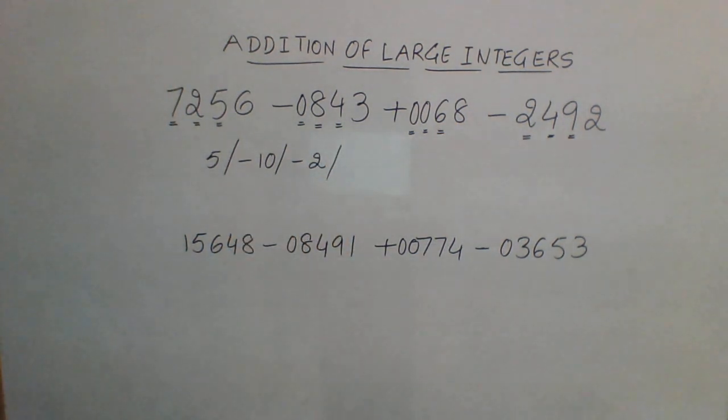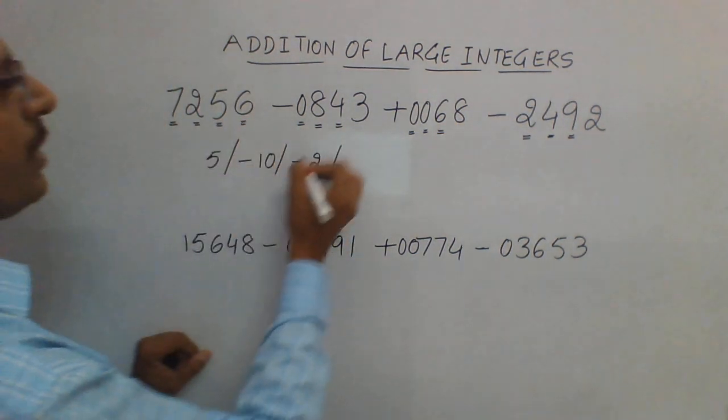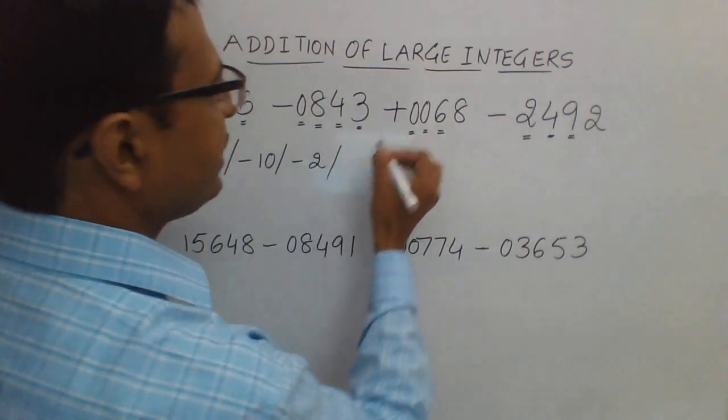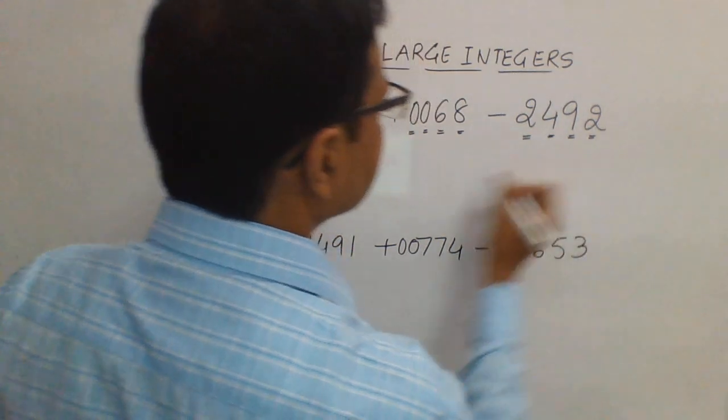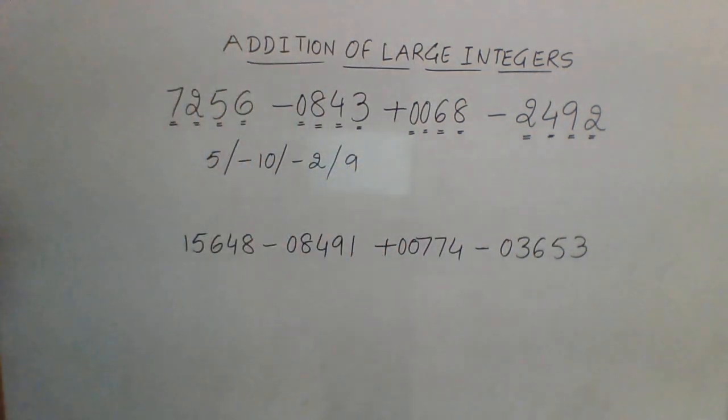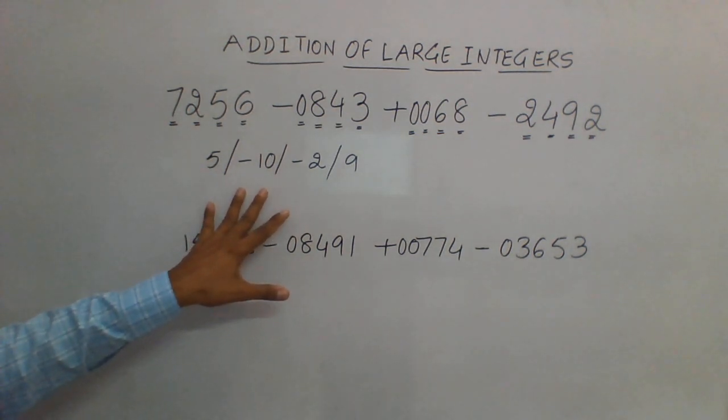Finally, 6 minus 3 is 3, 3 plus 8 is 11, 11 minus 2 is 9. So you have found out the 4 digits required for getting to the correct answer.